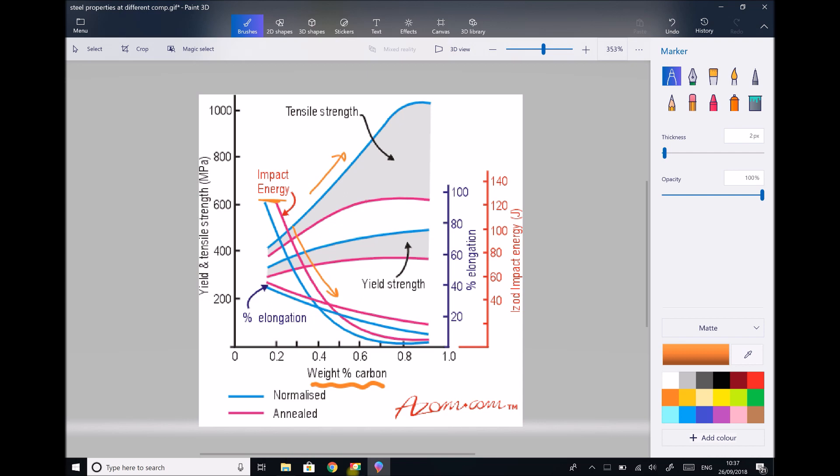The last line worth mentioning is percentage elongation. Percentage elongation really refers to how ductile a material is. Materials that aren't ductile are also not malleable. Here we see as the carbon content increases, the material becomes less malleable and less ductile. All of these things are in keeping with what we would expect when we increase the amount of ceramic within a relatively soft malleable metal.